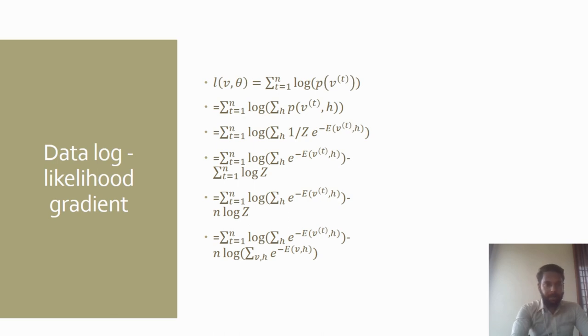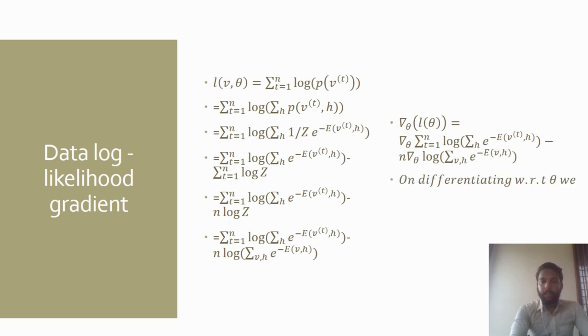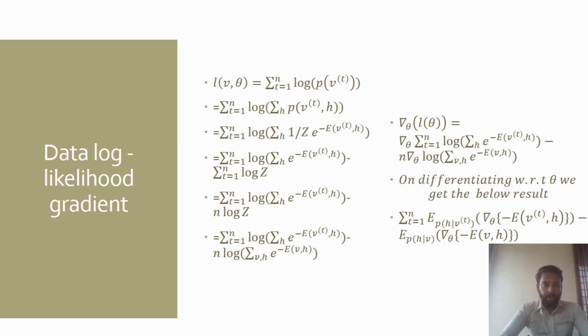To determine the parameters, we perform gradient descent on the log of the likelihood function. Applying the gradient descent, we will be differentiating with respect to theta over this equation. We will get the final equation as shown here.